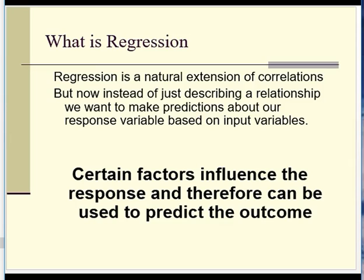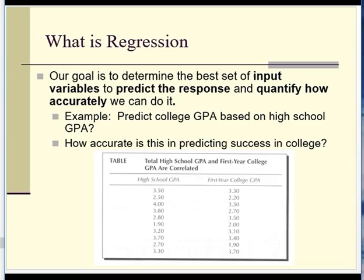Regression is very similar to the correlations we just covered, and actually when you see the formulas for slope and intercept, you'll recognize just how similar they are. That's because regression is built on the same principles. We know that some variables share common variability, so if we know something about one of them, we should be able to make predictions about the other.